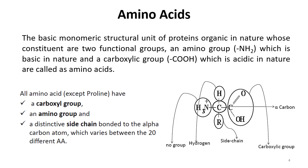Amino acids are the basic monomeric structural unit of proteins. Proteins are basically polymers, which consist of small repeating units called monomers. So in the case of proteins, proteins are polymers while amino acids are monomers. By the repetition of amino acid units we get proteins, which are macromolecules in nature.